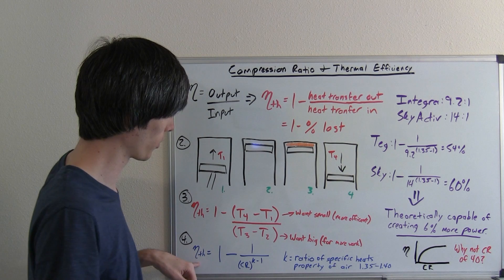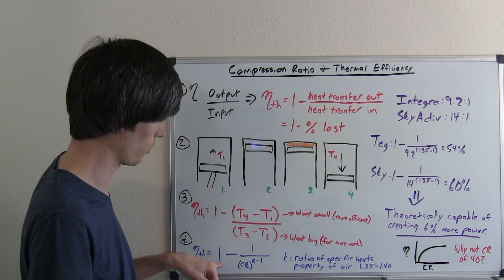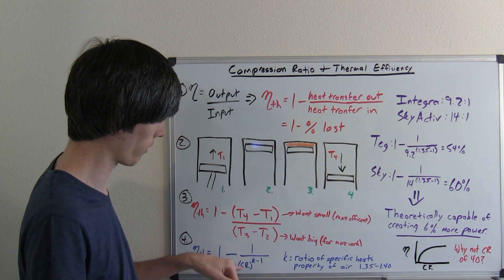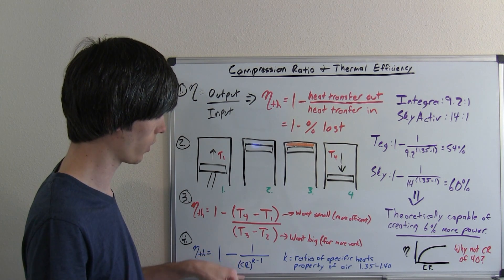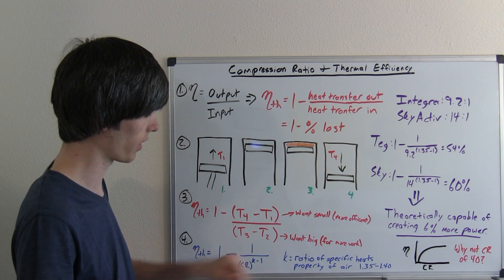The point is thermal efficiency can be further simplified down to one minus one divided by the compression ratio raised to the power of k minus one.